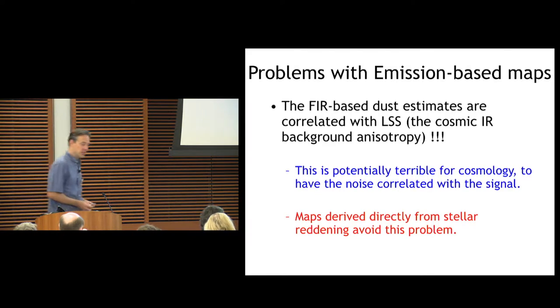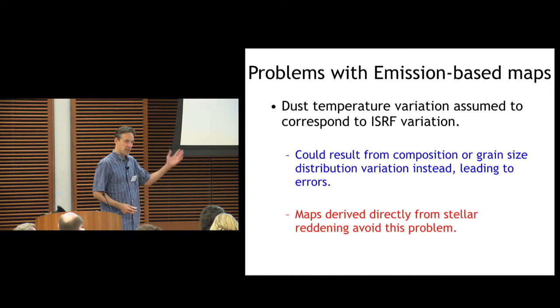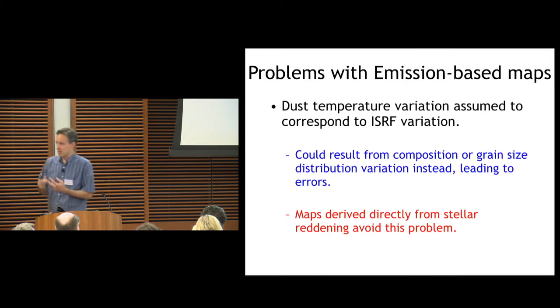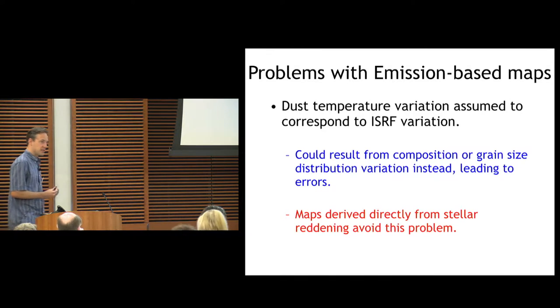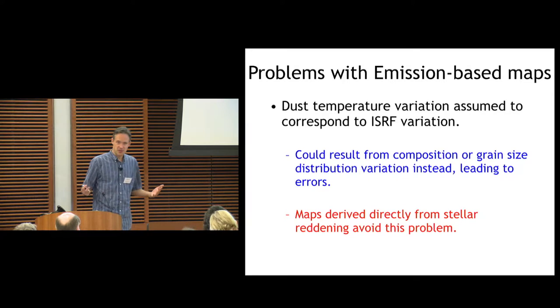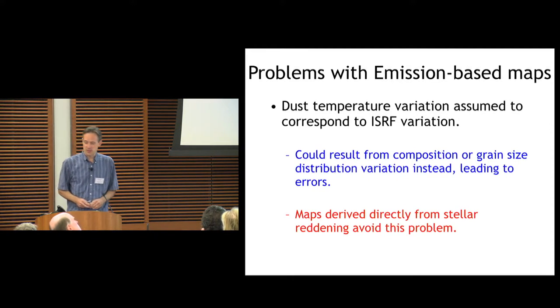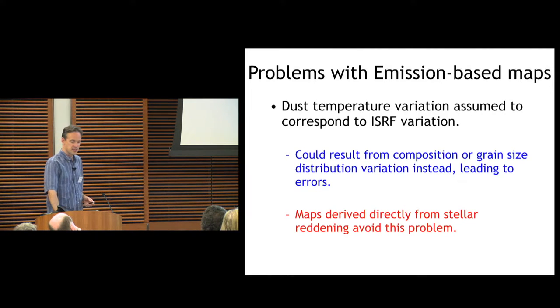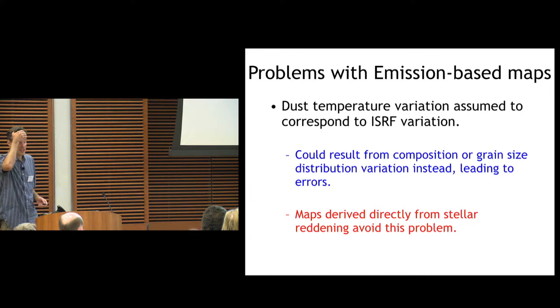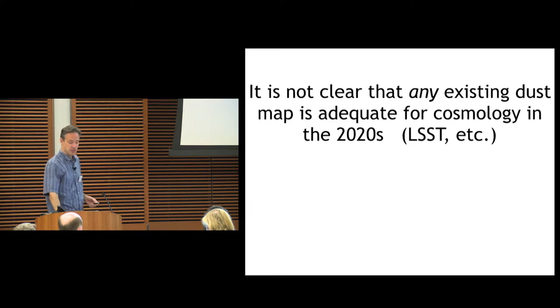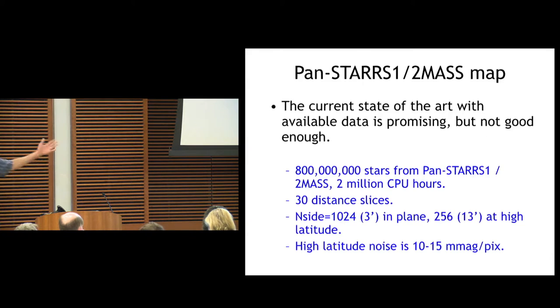Also, dust temperature variation. When we did SFD and the Planck people do this now, you assume the variation in the dust color temperature you see is, first of all, that it's actual physical temperature variation and that it's caused by the interstellar radiation field. If it's caused by something else, just the variation in the composition of the grains, for example, you can not only get the wrong correction, but it can even have the wrong sign. It's just a disaster if you aren't doing the temperature correction right. So it's actually not clear that any existing dust map is adequate for cosmology in the 2020s, like LSST. And of course, it goes without saying, those emission-based maps are not 3D, so they're not adequate for a lot of work in the Milky Way either.